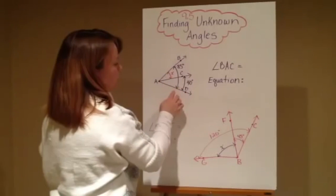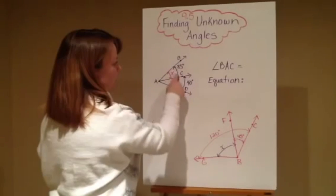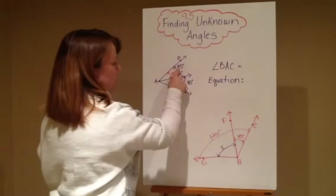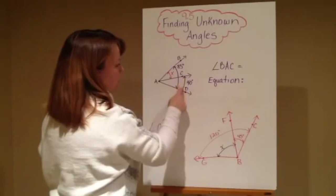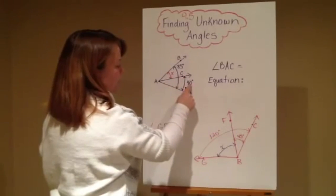And so the information that I'm giving you, I'm telling you that this angle right here is 85 degrees, and this smaller angle right here from this arrow to this arrow is 40 degrees.